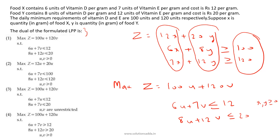Checking the options: maximize Z = 100u + 120v, subject to 6u + 7v ≤ 12, 8u + 12v ≤ 20, and u, v ≥ 0 — this satisfies all dual constraints. Option 1 is the correct answer for the dual of the formulated LPP.